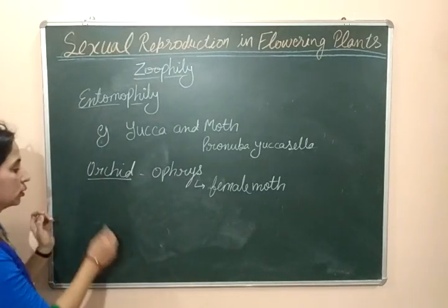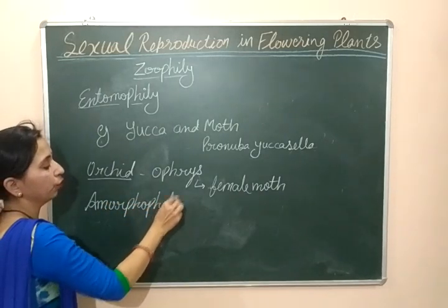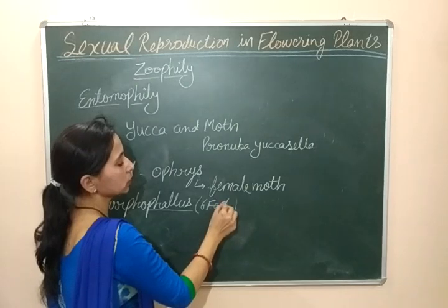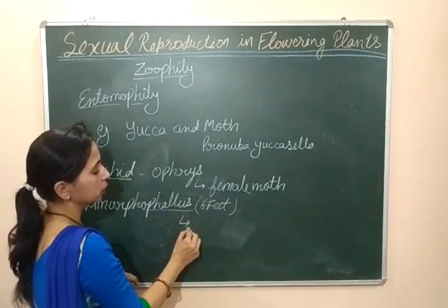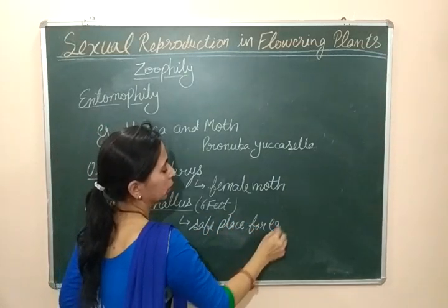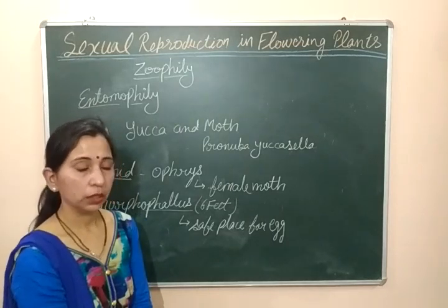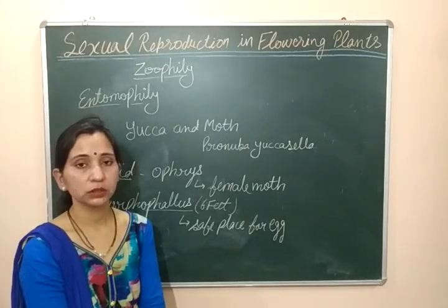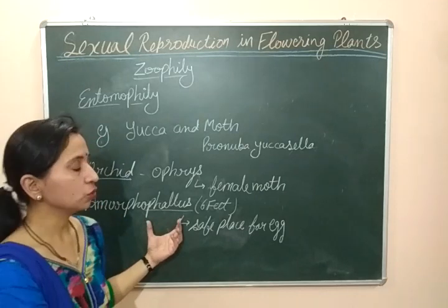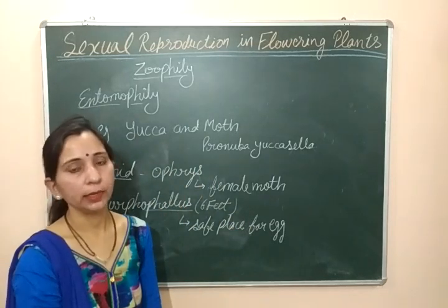Now we will discuss one more important example, which is Amorphophallus. Amorphophallus is a very tall plant — it is almost 6 feet tall. This plant provides a safe place for insects to lay their eggs as a form of reward. Just like some flowers give rewards in the form of nectar or pollen grains, Amorphophallus also provides a reward in the form of a safe place for laying eggs. These are some important examples related with entomophily.